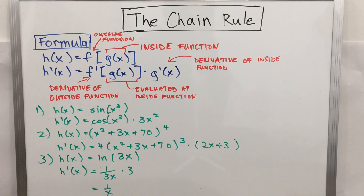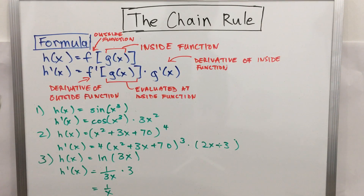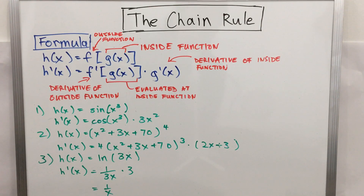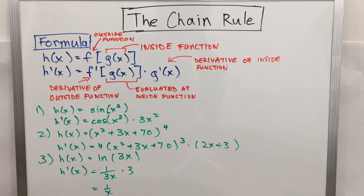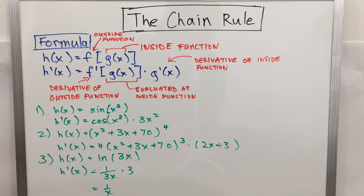Hopefully these examples make it clear how the formula is applied. Example number one: if h(x) = sin(x³), then the derivative h'(x) = cos(x³) times 3x².